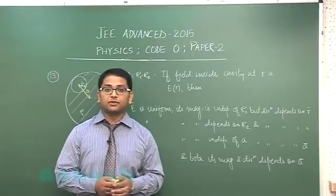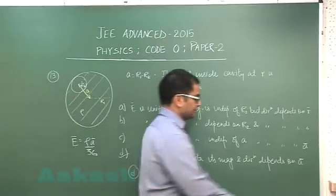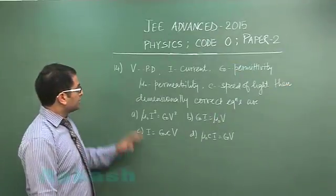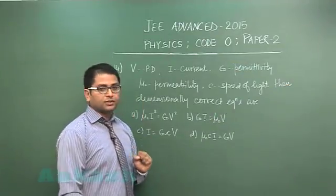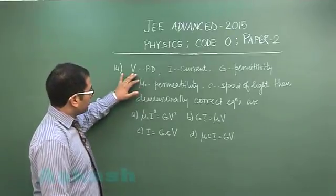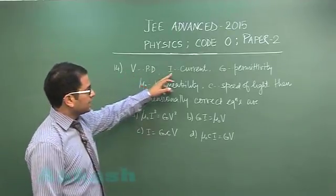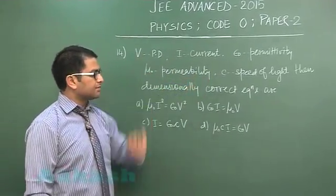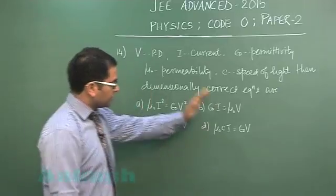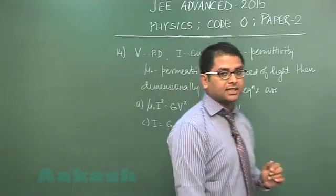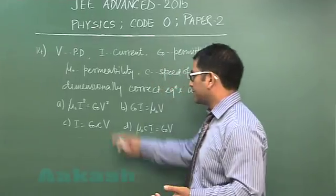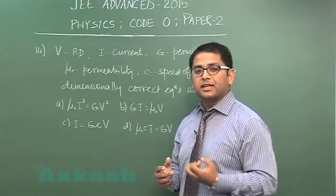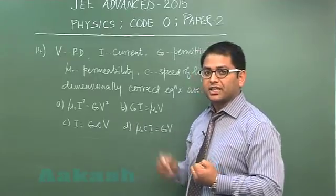Now let us move to question number 14, another beautiful setup from dimensional analysis where V is the potential difference, I is the current, ε₀ is the permittivity, μ₀ is the permeability, and C is the speed of light. We need to relate these dimensionally. One way is to calculate the dimensions of each quantity and solve, but experience always matters when checking dimensions.